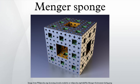The Menger sponge is a closed set. Since it is also bounded, the Heine-Borel theorem implies that it is compact. It has Lebesgue measure zero. It is an uncountable set. The Lebesgue covering dimension of the Menger sponge is one, the same as any curve.